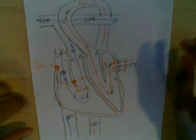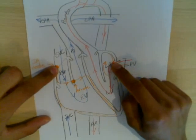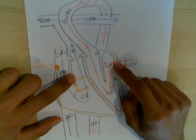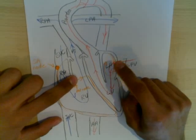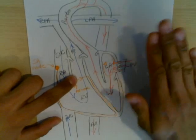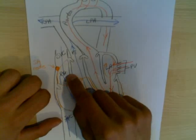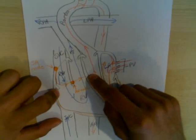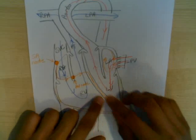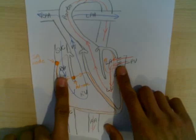So a quick review: SA node fires off. Impulse travels round the back of the heart to the left atrium, and at the same time travels through the right atrium to the AV node, where it's slowed down. This impulse depolarises the left atrium — that's finished. But this impulse, after depolarising the right atrium, travels into the bundle of His, down the interventricular septum, through the left and right bundle branches, and up the Purkinje fibres.